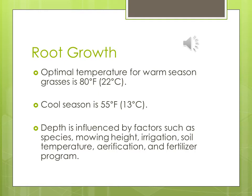Root growth: optimal temperature for warm season grasses is 80 degrees Fahrenheit. Optimal root growth for cool season grasses is 55 degrees Fahrenheit. Depth of roots can be influenced by factors such as the species, mowing height, irrigation, soil temperature, aeration, and the fertilizer program. This is testable information — warm season: 80°F, cool season: 55°F.